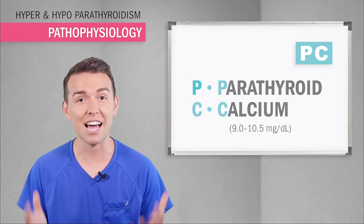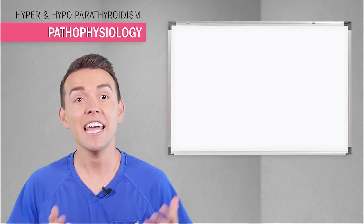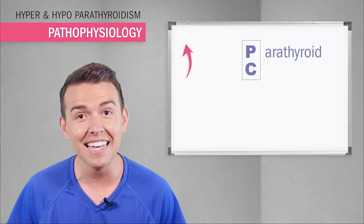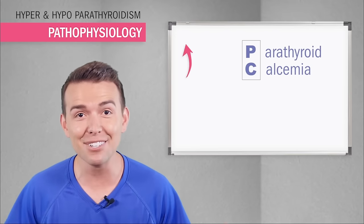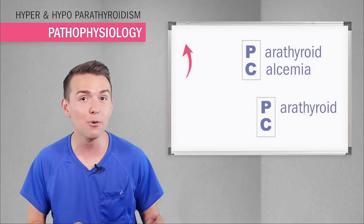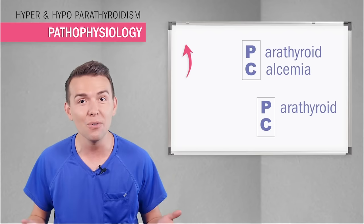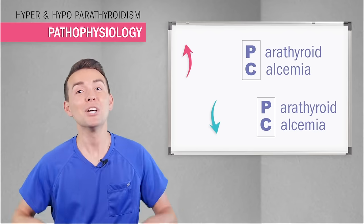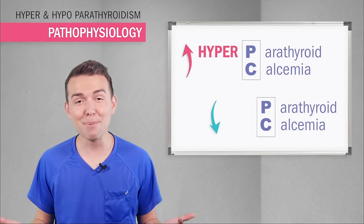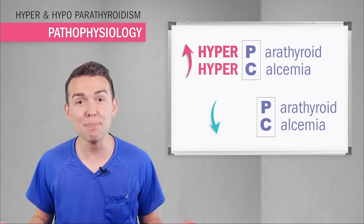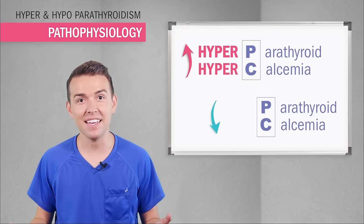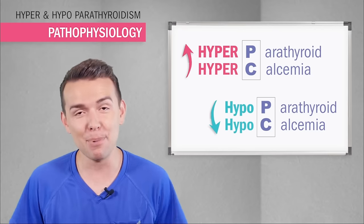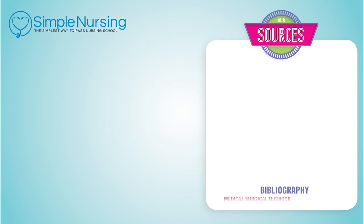The main point is the calcium. If the parathyroid hormone is high, that means calcium is high. And when the parathyroid is low, calcium is low. So hyperparathyroidism means hypercalcemia, and hypoparathyroidism means hypocalcemia.